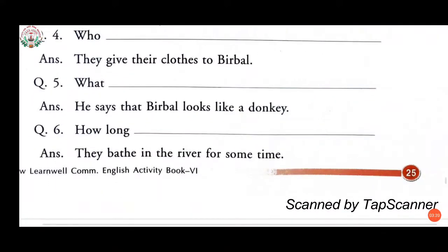Question number five, the answer is: 'He says that Birbal looks like a donkey.' The question formation will be: What does Akbar say about Birbal? Question number six, the answer is: 'they bathe in the river for some time,' so the question becomes: How long do they bathe in the river?